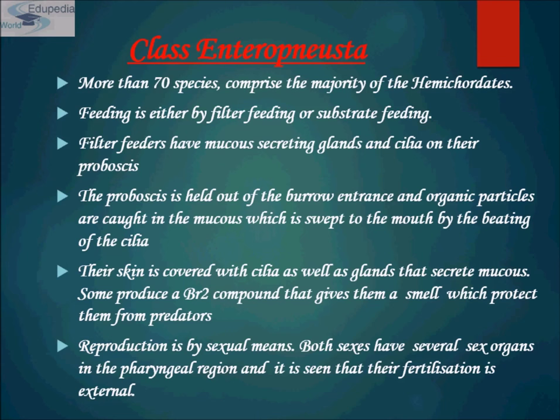Enteropneusta comprise the majority of hemichordates. Feeding is either by filter feeding or substrate feeding. They live in burrows in the substrate — mud or sand — or under rocks, in both shallow and deeper waters. The proboscis is small and the collar is very small. The proboscis is held out of the burrow entrance and organic particles are caught in mucus, swept to the mouth by beating cilia. Their skin is covered with cilia and mucus-secreting glands. Some produce bromide compounds that give them a smell which protects them from predators. Reproduction is by sexual means.